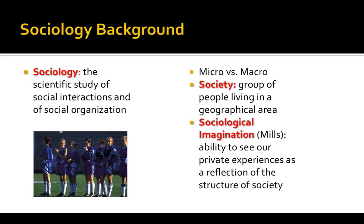To understand sociology, sometimes we take a micro point of view, focusing on small groups or even the individual. Or you can contrast that by looking at a macro point of view. Sociology is primarily concerned with the macro point of view, involving something like society or culture. Society has a lot to do with people living in a similar geographical area — when we talk about American society, we're talking about the geography associated with the United States of America.